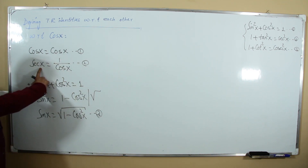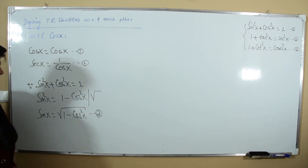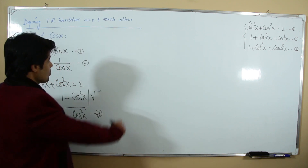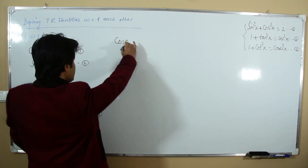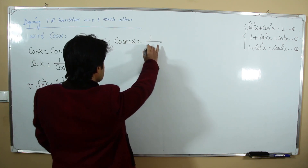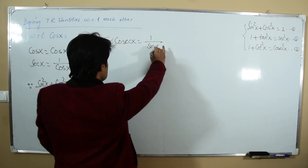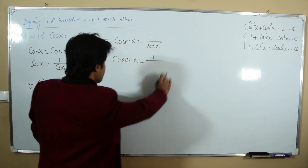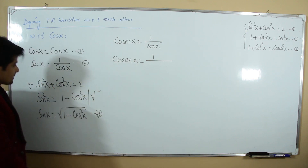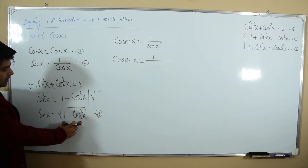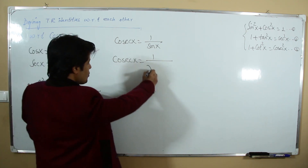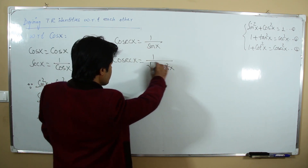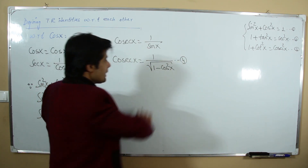We have defined cosine, secant, and sine. Since cosecant is 1/sine, cosecant with respect to cosine is 1/√(1 - cos²x). This is our fourth relation.